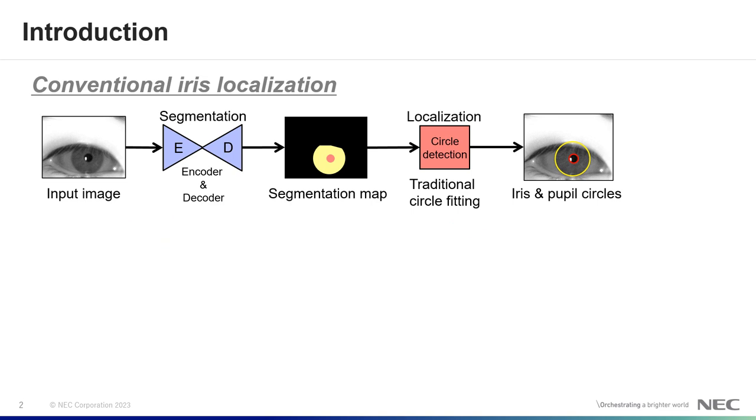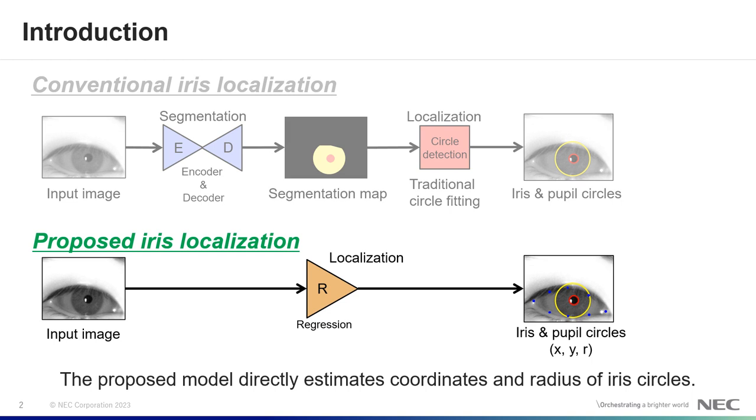To solve these problems, we propose direct iris localization using a regression network. The proposed model directly estimates coordinates and radius of iris circles.